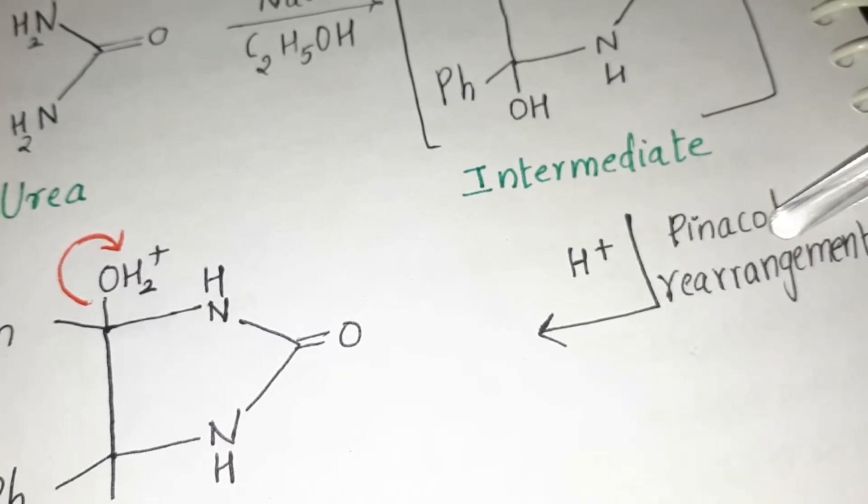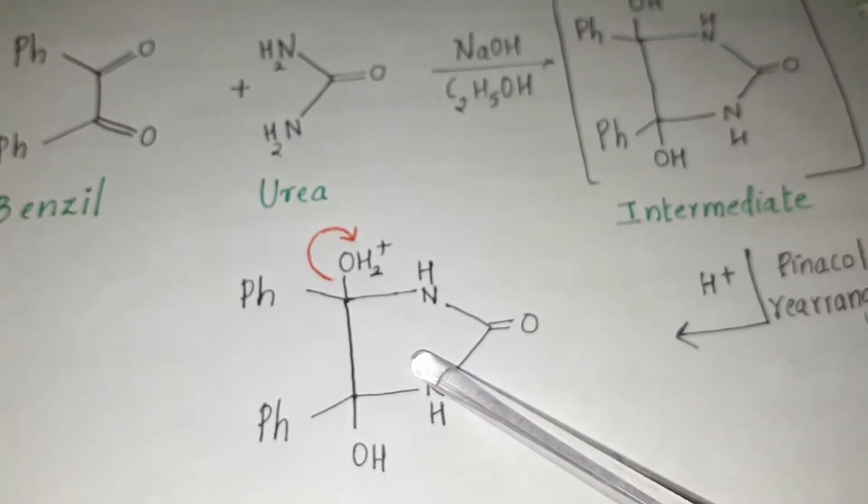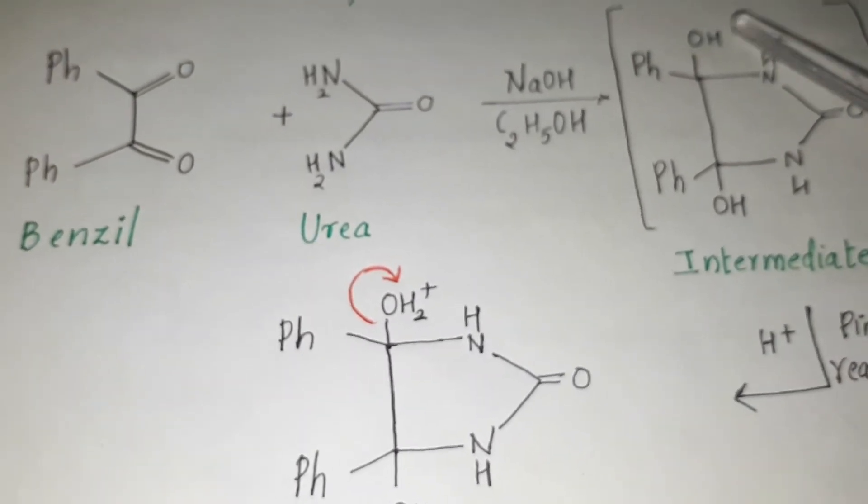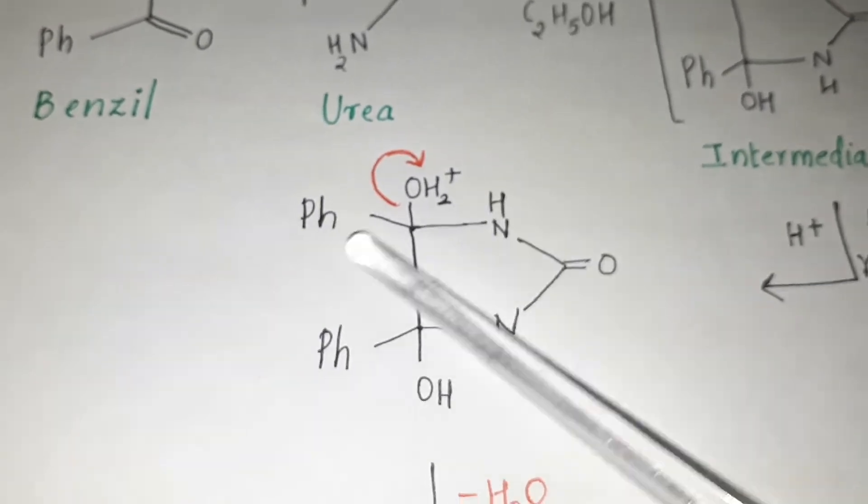This intermediate undergoes pinacol rearrangement in the presence of H+. Then H+ gets added to the OH group and it becomes OH2+, and this is another intermediate compound.